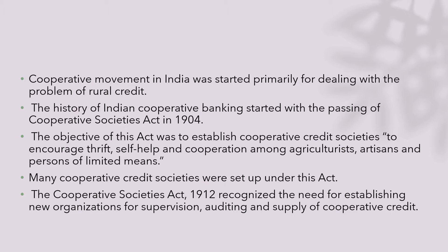The main objective of this act was to establish some kind of cooperative credit societies to encourage thrift, self-help, cooperation, etc., mainly among the people who are agriculturists, artisans, as well as people with limited means. These are the ones who are mainly concentrated in rural areas. So this rural cooperative credit, or this cooperative movement, was basically focused on the rural population. Many cooperative credit societies were set up as a part of this Cooperative Credit Act of 1904.